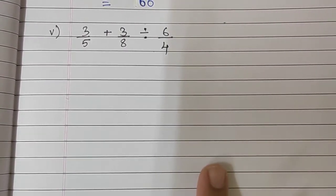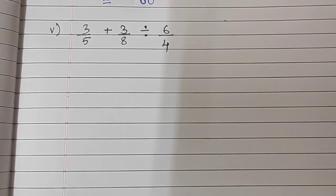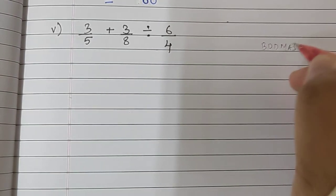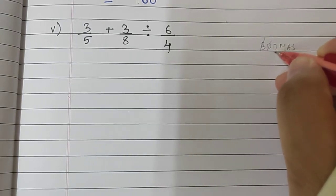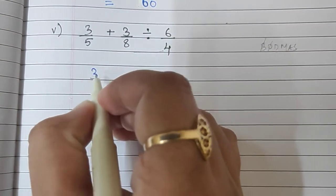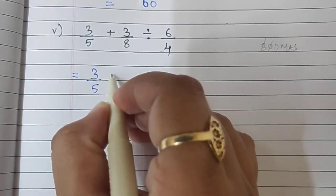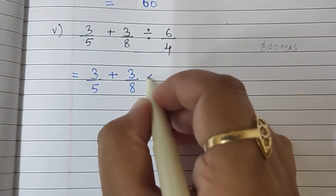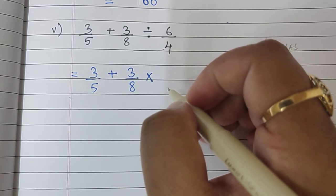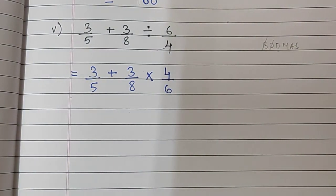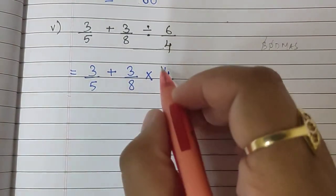Moving to the last sum: 3 upon 5 plus 3 upon 8 divided by 6 upon 4. Again we use the BODMAS rule. There is no bracket. There is Division, so we begin with Division first. I will write: 3 upon 5 plus 3 upon 8 — Division becomes multiplication, and you write the reciprocal of the divisor, as you have already studied in the previous practice. We can do the cancellation.